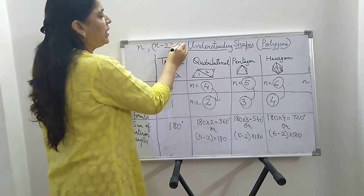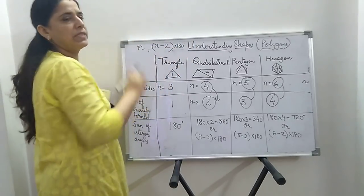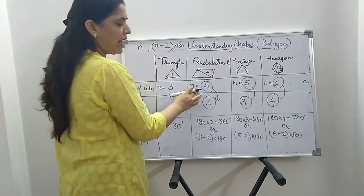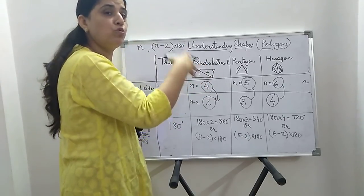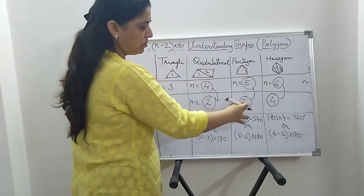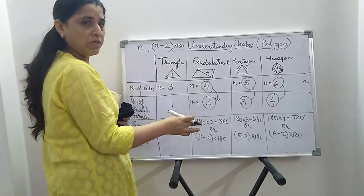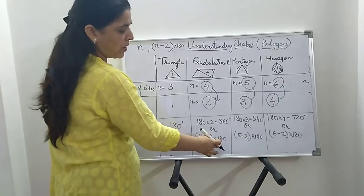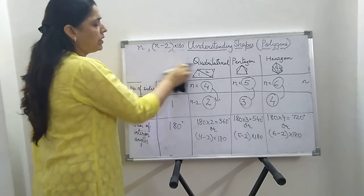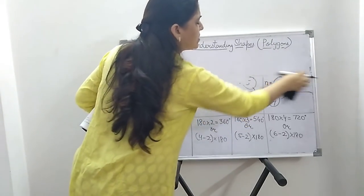We can say that if there are n sides, the number of triangles formed is n minus 2. Two less than the number of sides. If a figure has n sides, n minus 2 triangles will be formed. If there are these many triangles, what will be the sum of interior angles? It is n minus 2 into 180 — why into 180? Because the sum of angles of one triangle is 180 degrees.